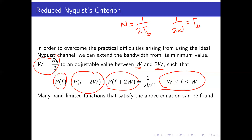I want the sum of these three replicas to be constant for the range of frequencies from negative W to W. This is analogous to what we did when designing the receive filter in the vestigial sideband system — I need the frequency response flat, but only for the range of frequencies of interest. The same principle applies here.